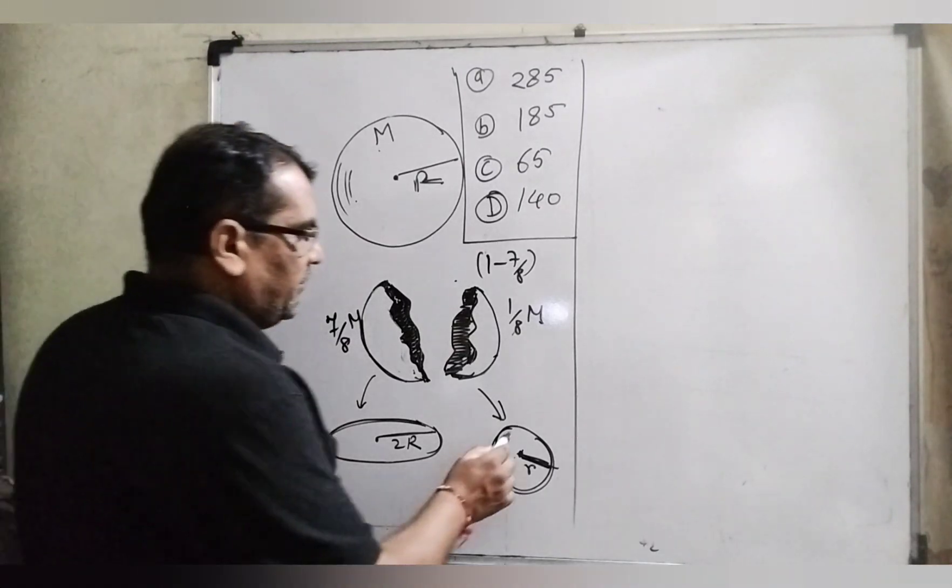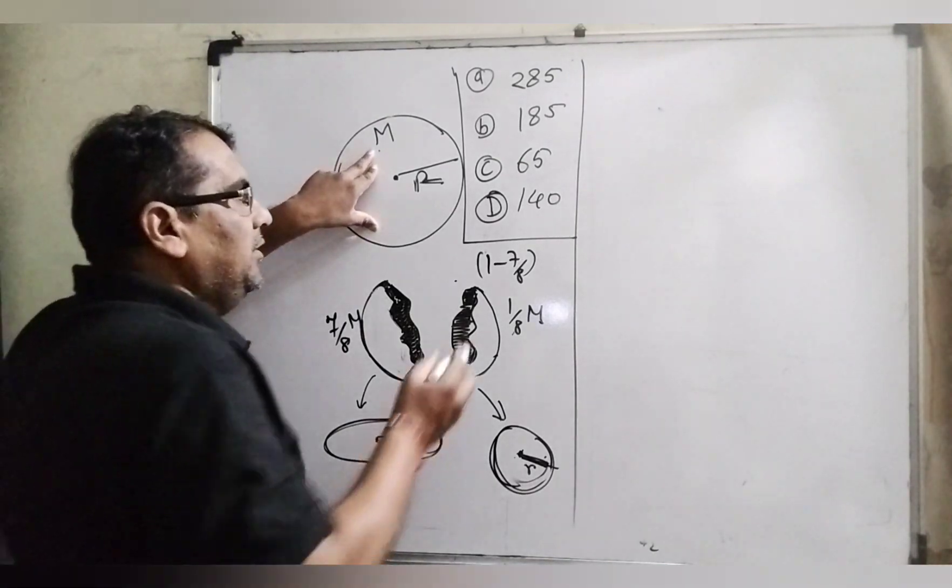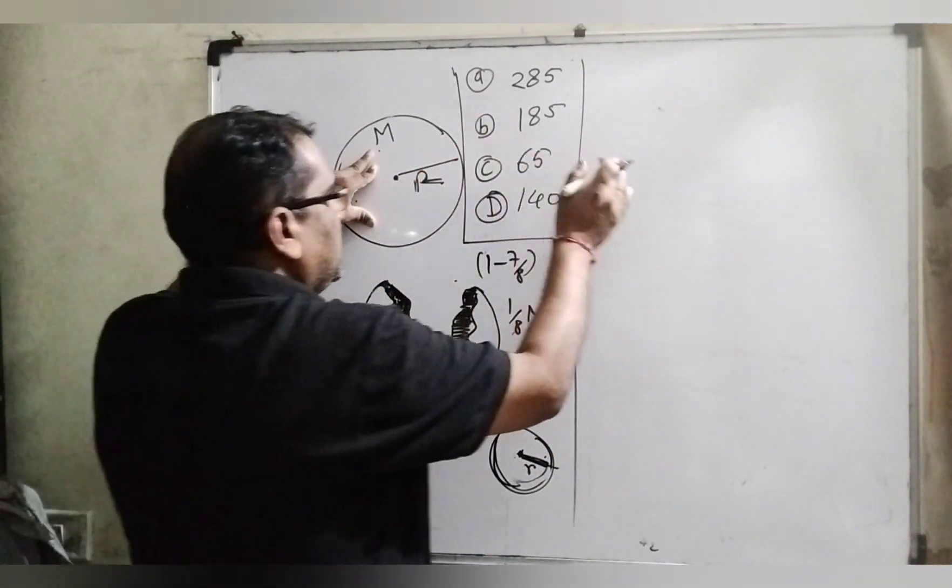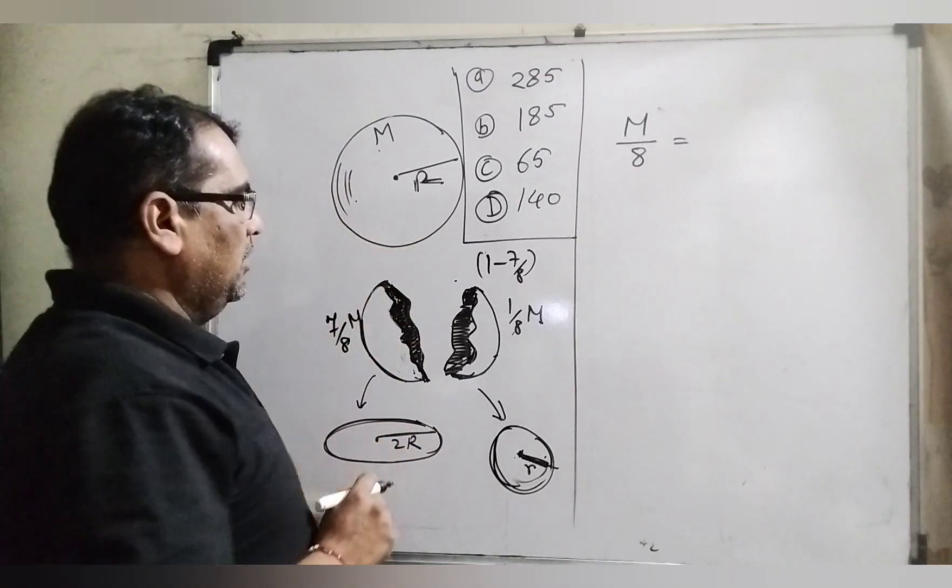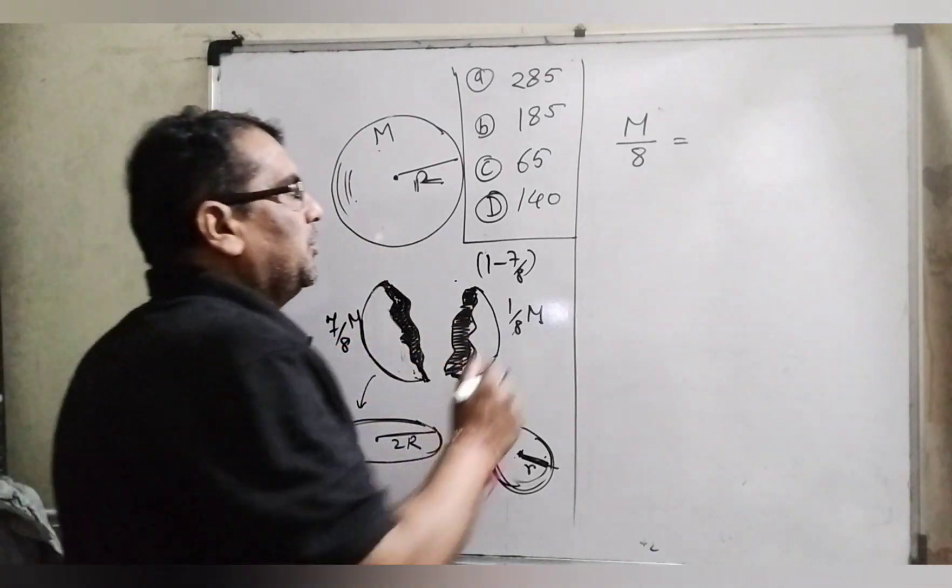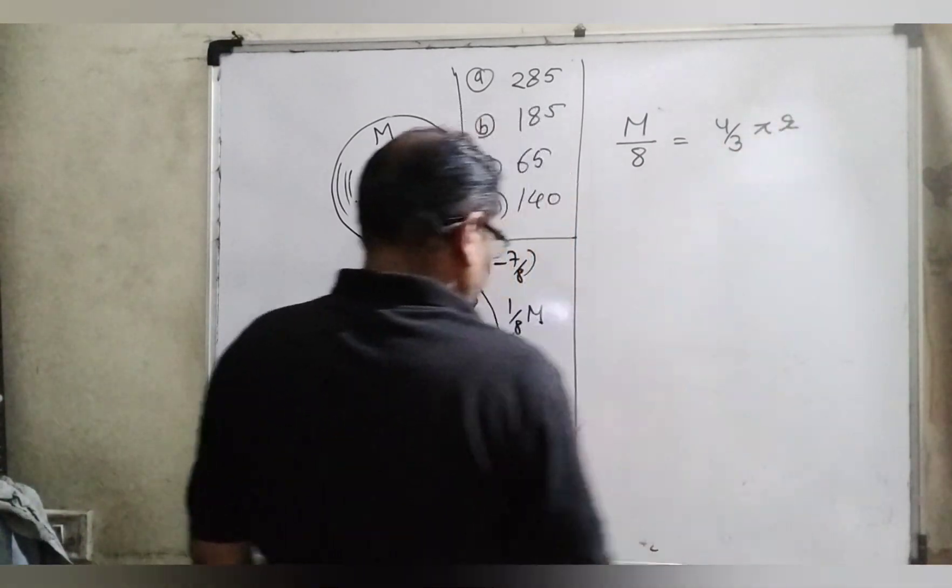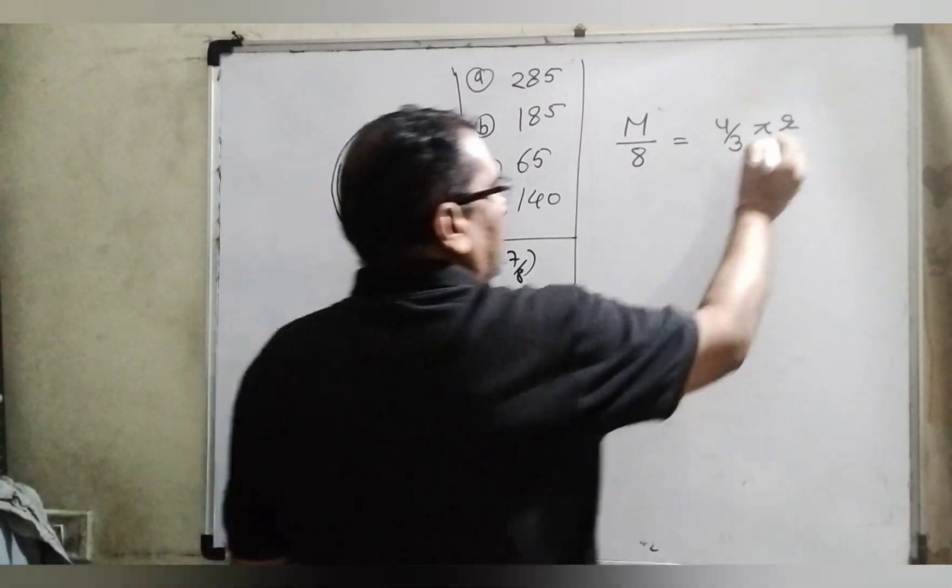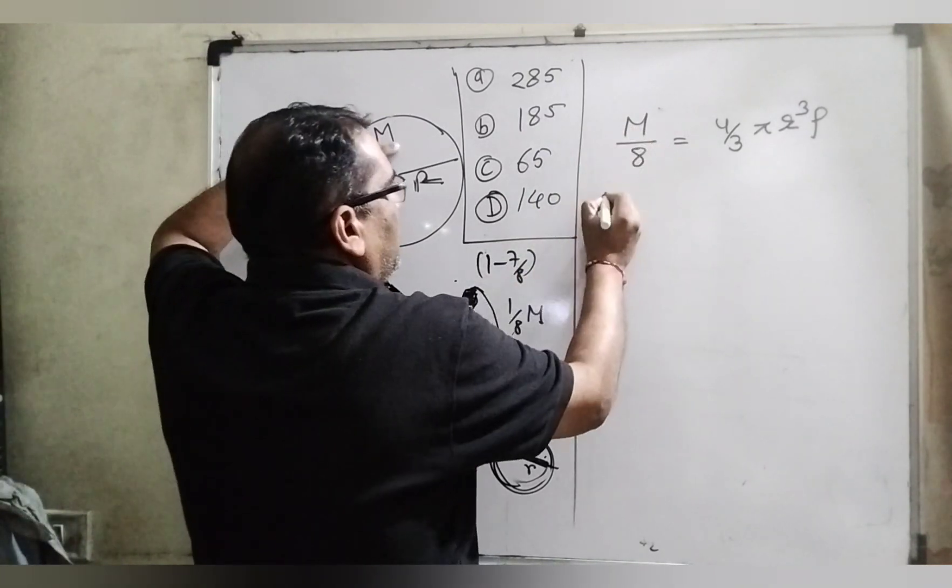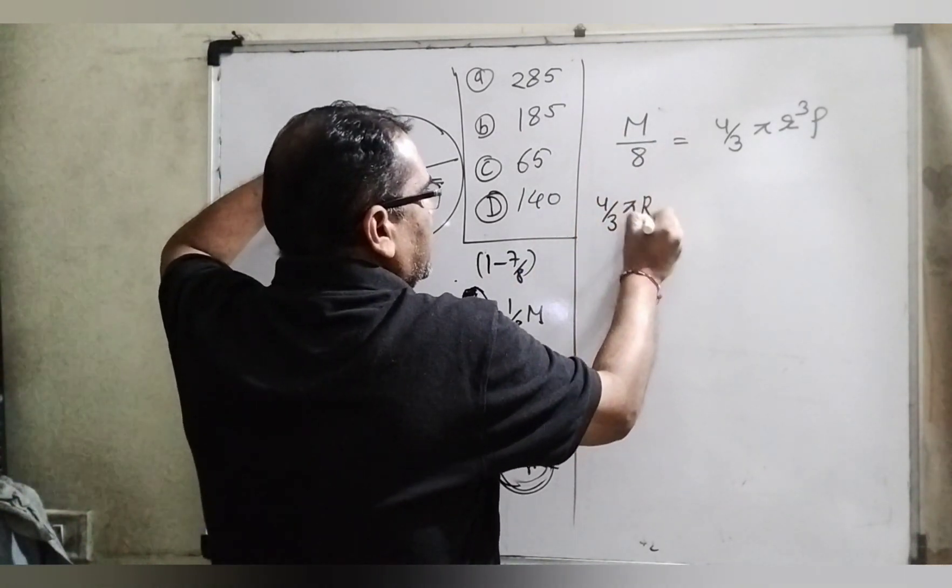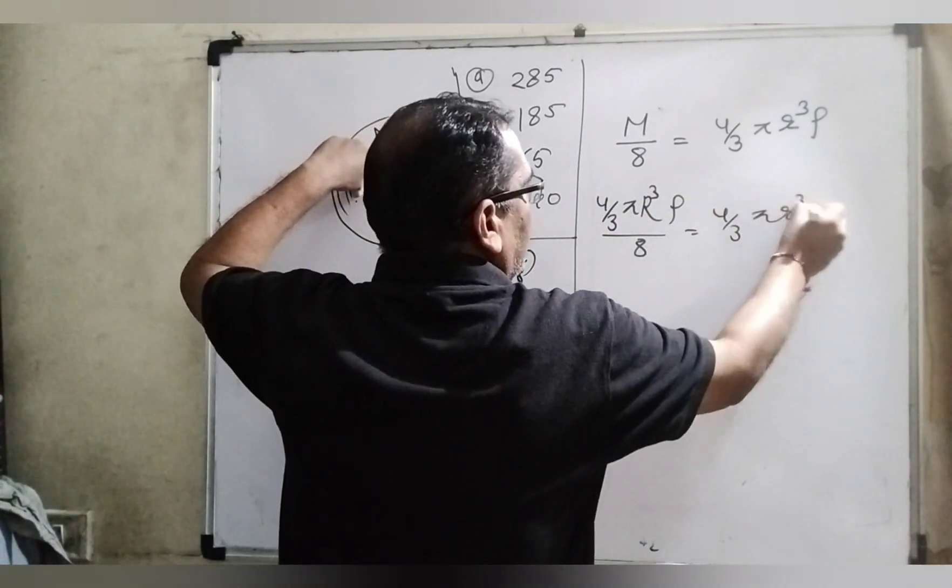So first we have to find out the radius of this sphere. How can we find out? As you know we are given the 1/8 part of this total sphere mass. So 4/3 pi times capital R cubed times density upon 8 equals 4/3 pi times small r cubed times density.